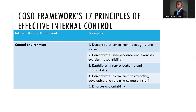The control environment is simply the environment used to direct and control the business — basically what is happening at the strategic level in the organization. According to COSO, the control environment is the most important of the components. If you map that to ISO, you are looking at leadership, clause five. There is agreement between the COSO ERM framework and ISO management system standards.